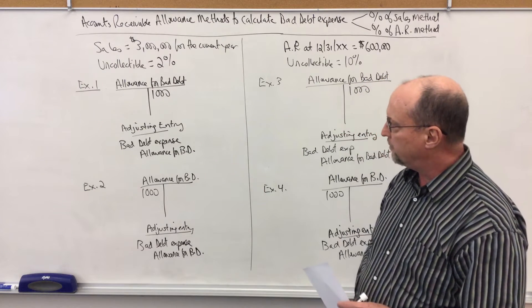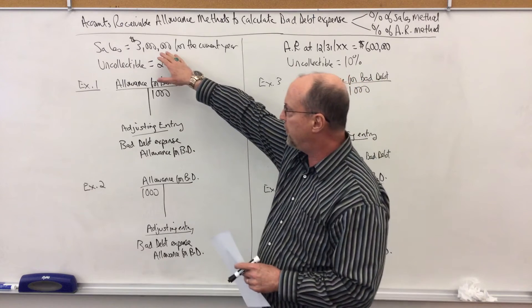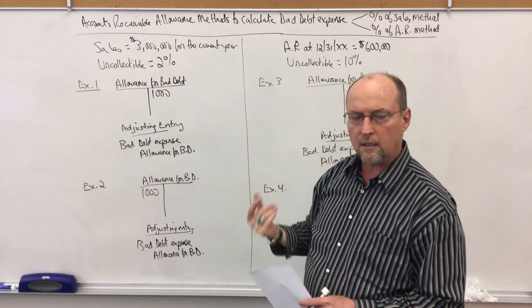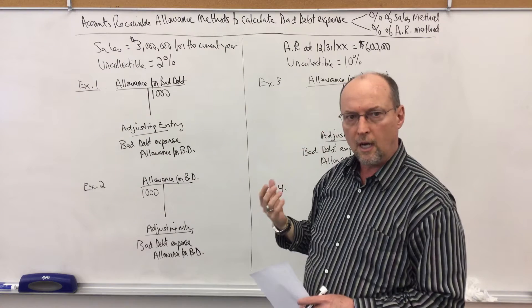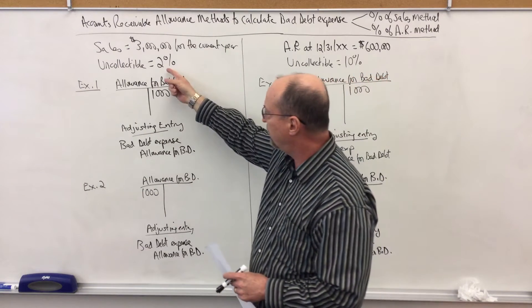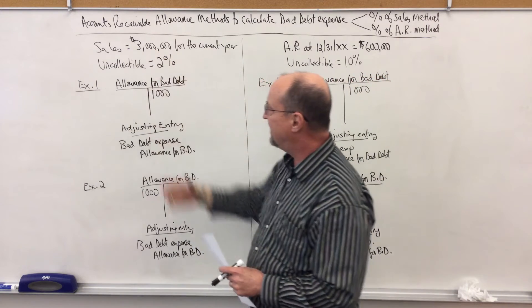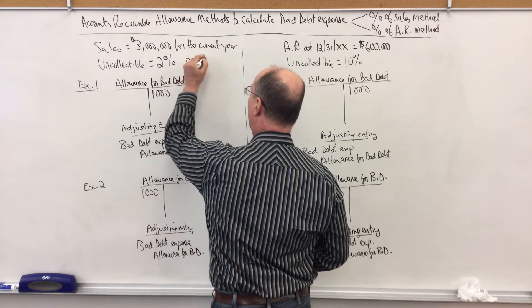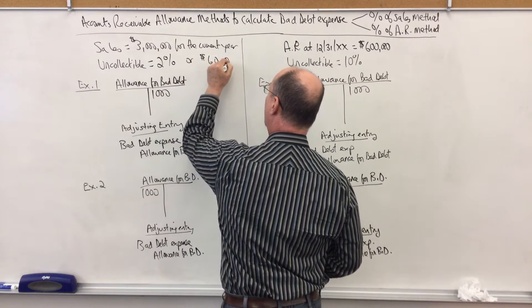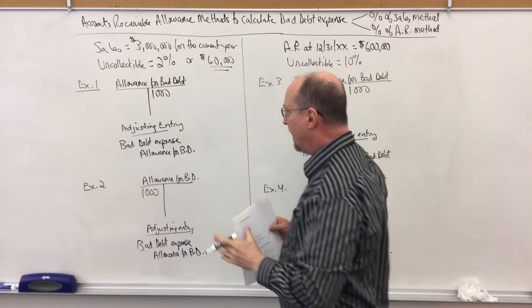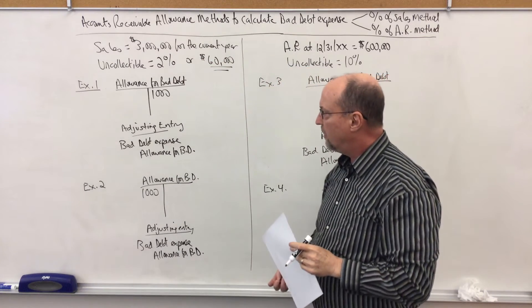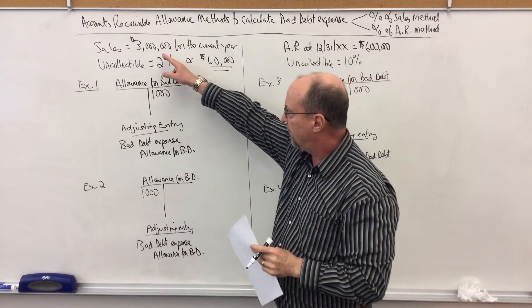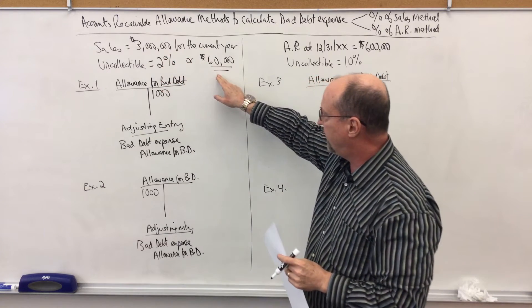In this example, my revenue for the year was three million dollars, and we estimate that the uncollectible percentage of sales is two percent, which would be sixty thousand dollars. With the sales method, we multiply sales of three million times two percent, and we get sixty thousand dollars.